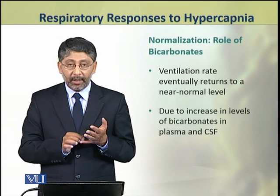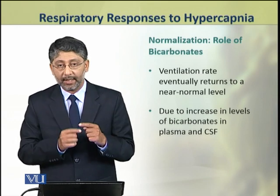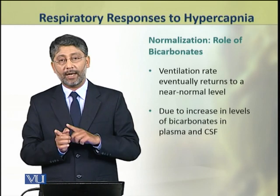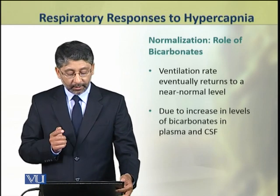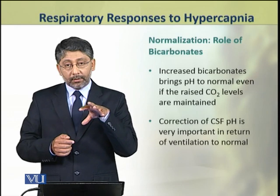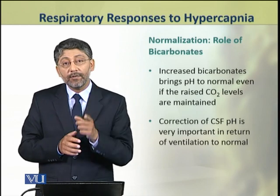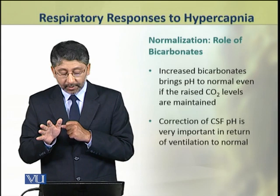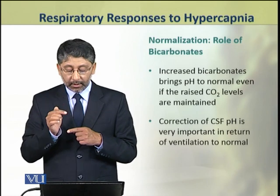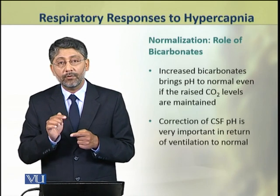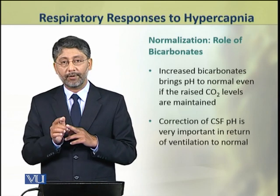This is achieved by increasing the concentration of bicarbonates in blood and CSF. When the bicarbonate level increases, pH is restored and breathing rate returns to a normal level. The increased bicarbonates bring pH back to normal even if carbon dioxide levels are still maintained at a higher level. The correction of cerebrospinal fluid pH is very important in the return of ventilation rate to normal.